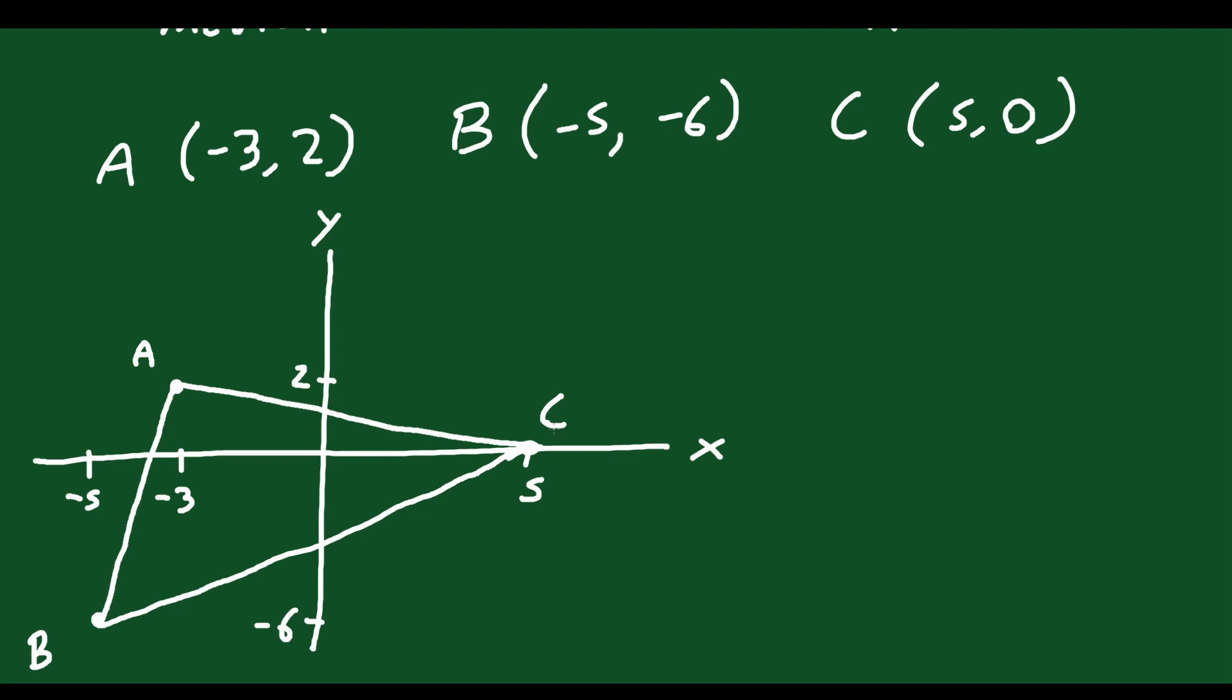So what is the median from vertex A? What does that mean? The median from vertex A is a straight line from point A, as you can probably guess, which connects to the midpoint of BC. So if we say the midpoint of BC is right here, and you connect a line from A to that midpoint, the equation of that line is going to be what we call the median from vertex A. So what this question is asking for is the equation of that line, y equals mx plus b. That's what they're asking for.